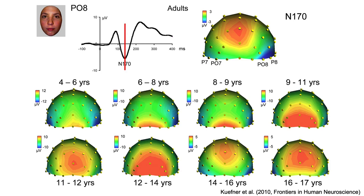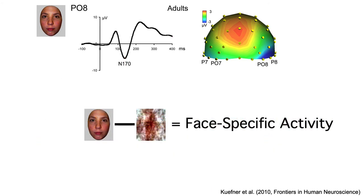Here are the scalp distributions for the face stimuli at the time of the N170, viewed from the back of the head. Just as in previous studies, there were huge differences across ages. But do these differences reflect changes in face processing, or changes in non-specific visual processes? To answer that question, Kufner et al. looked at the scalp distribution of the face minus scrambled face difference wave. The idea is that the ERP to the faces contains all the same activity as the ERP to the scrambled faces, plus face-specific activity, so a face minus scrambled face difference wave will isolate the face-specific activity.